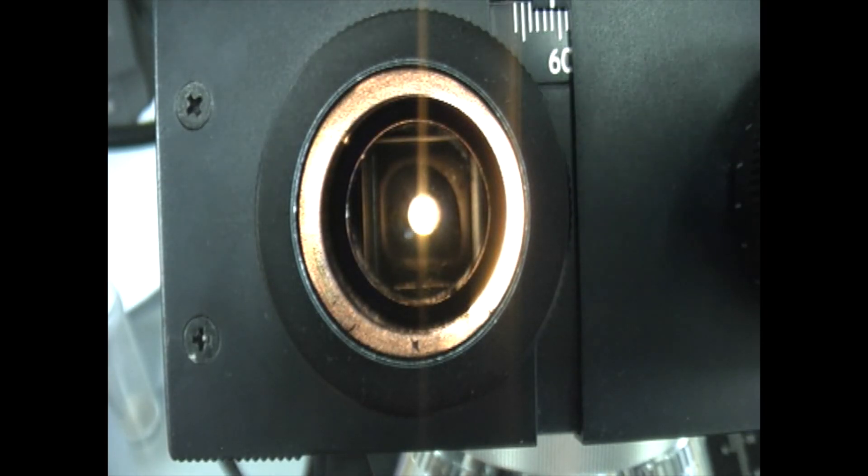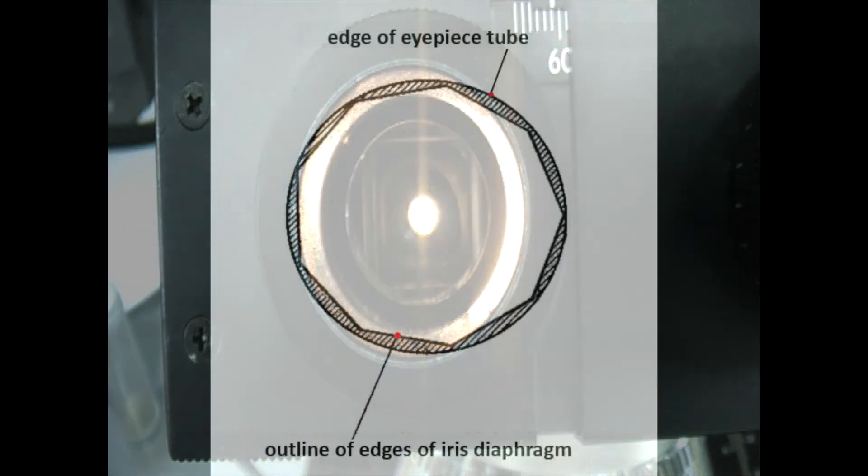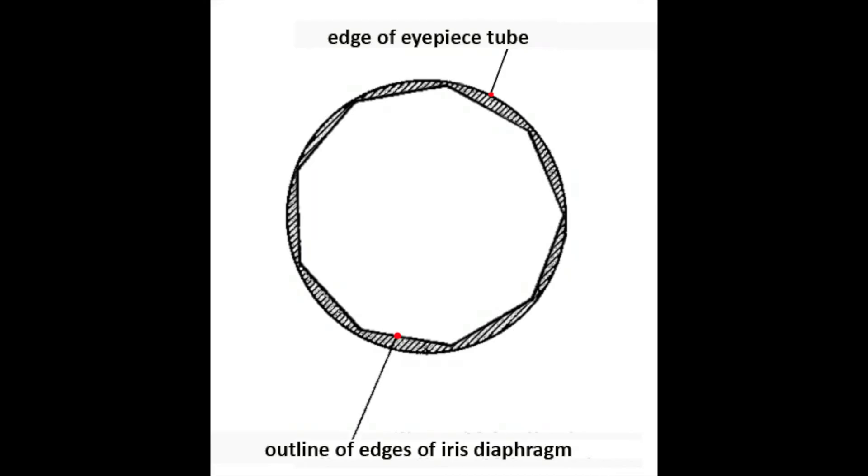The correct position is when the blades just disappear from view, as in this diagram. Practice moving the lever so that you are familiar with the blade movement and choose the correct position, then replace the eyepiece.